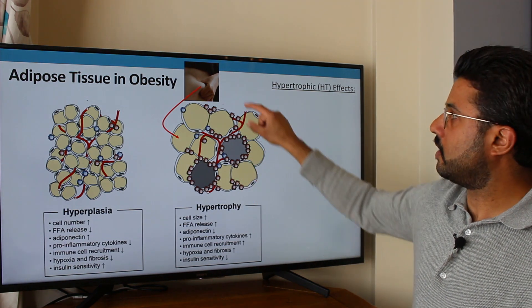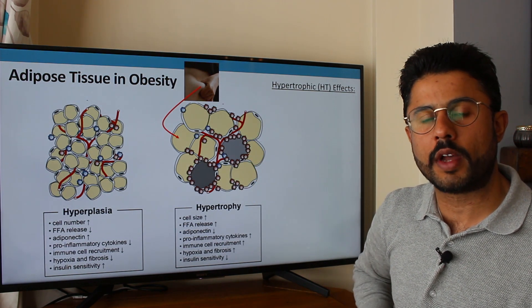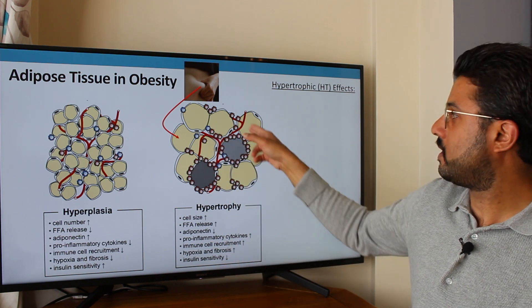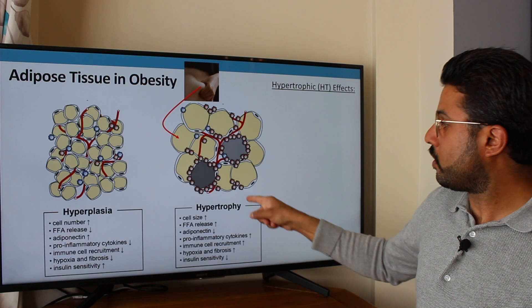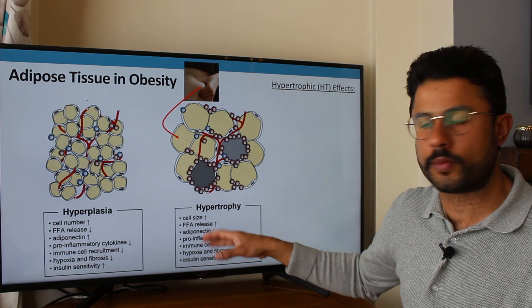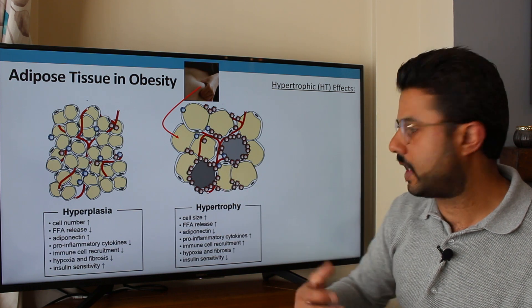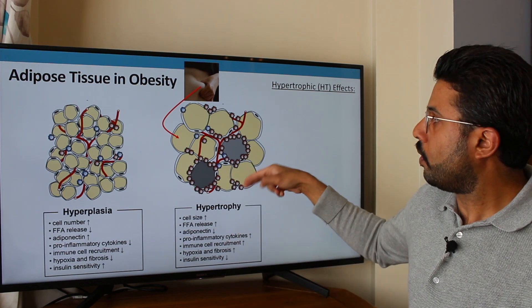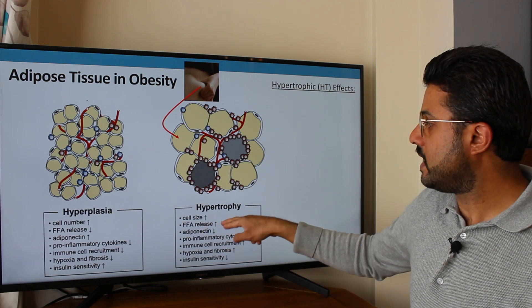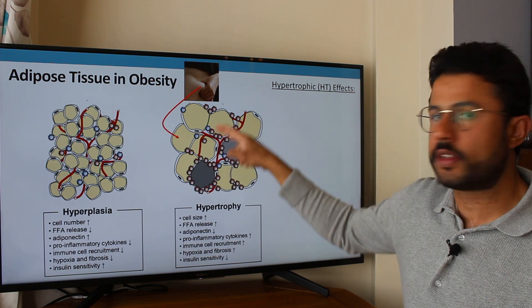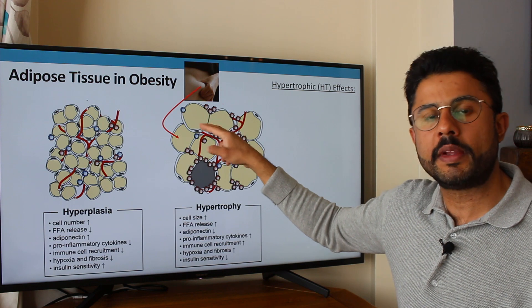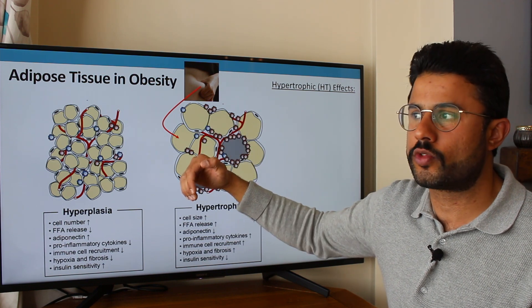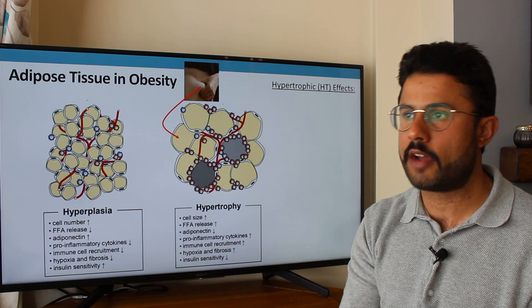Now we're talking about obesity. When you have hypertrophic adipocytes — as we get into our 20s, 30s, 40s and start gaining weight — we see an increase in cell size. That's what hypertrophy is. As cell size increases, there's more likelihood of free fatty acids being released out of those cells, simply because the number isn't increasing but their size is. There's a limited capacity to hold triglycerides, and essentially those triglycerides leak into the bloodstream — giving you those high cholesterol readings when you visit the doctor.